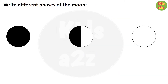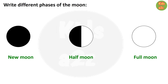Here, pictures of different phases of the moon are given and kids need to write their names. The first one is new moon, the second picture is half moon, and the third picture is full moon.